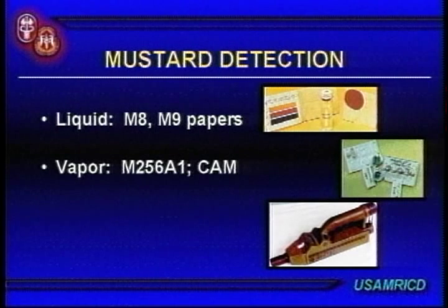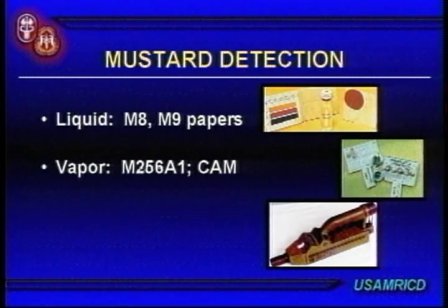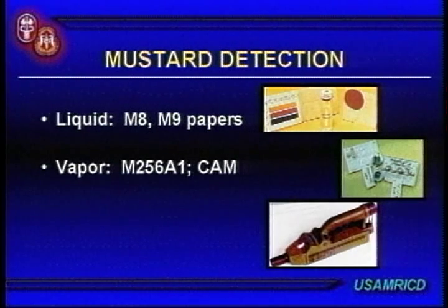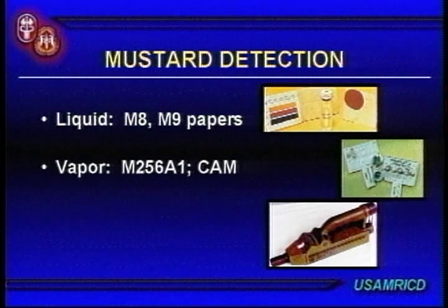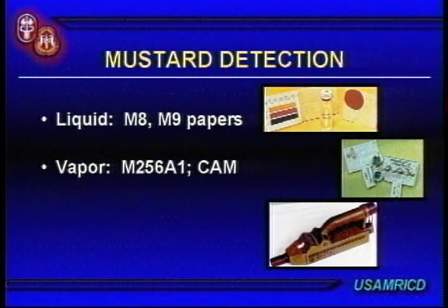The M8 test paper turns three colors: G agents turn orangish-yellow, H (mustard) turns red, and V agents turn a dark color — black, dark green, or brown. The M9 tape is all-or-nothing: it turns red if exposed to nerve agents or vesicants. The M256 kit detects vapors — vesicants, cyanide, and nerve agents — and is quite good, but takes about 20 minutes to run through.